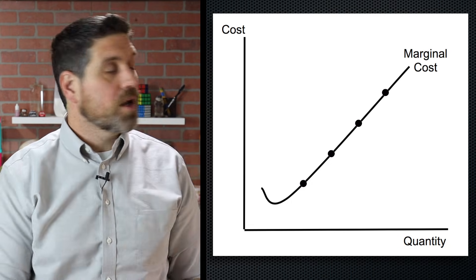Kind of. If your loss becomes really, really big, then you should actually not produce where MR equals MC and instead produce nothing at all and just shut down. But this is not the same thing as permanently leaving the market — you're just shutting down in the short run and trying to wait things out.